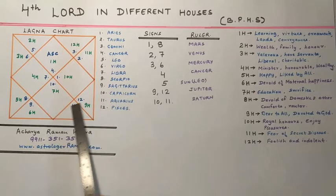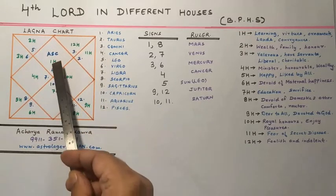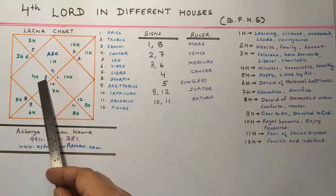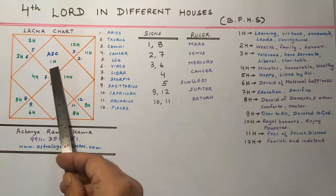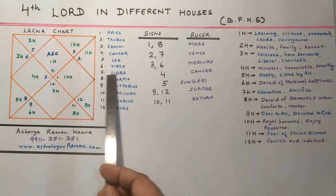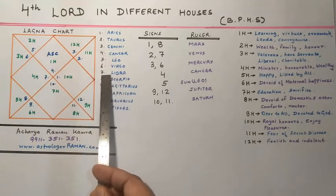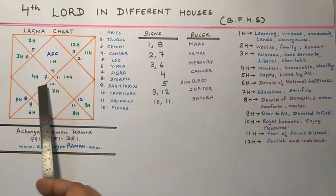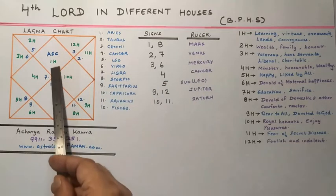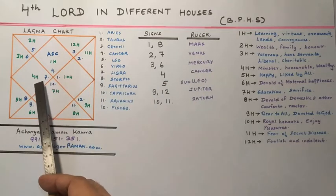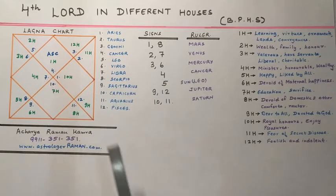Now in this example, counting 1, 2, 3, 4 from the ascendant, the fourth house falls on the 7th sign which is Libra, and its lord is Venus. So we will do the results of the lord of the 4th house placed in different houses.